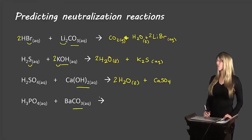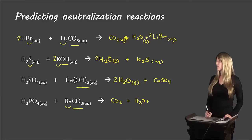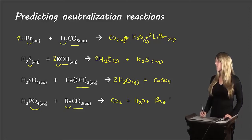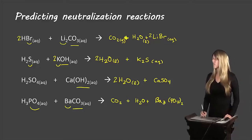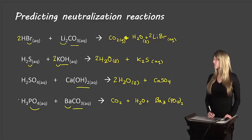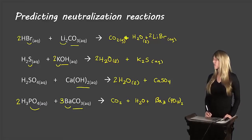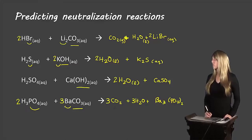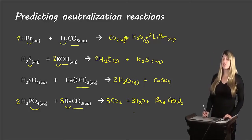Here we have a carbonate base, so one product is CO₂ and one is H₂O. We're left with barium and phosphate, giving us Ba₃(PO₄)₂. To balance: one PO₄ but two on the right, so put a two on H₃PO₄; one barium but three on the right, so put a three on BaCO₃; three carbons on the left, so put a three on CO₂; six hydrogens, so put a three on H₂O. Checking oxygens: three times two is six, plus three is nine on the right; three times three is nine on the left. All balanced.